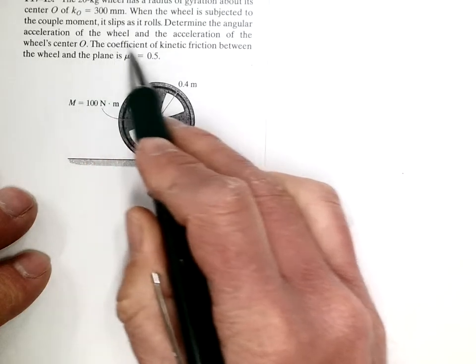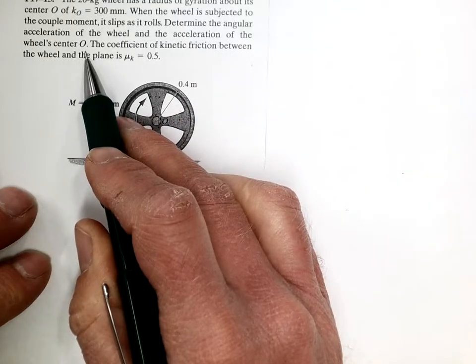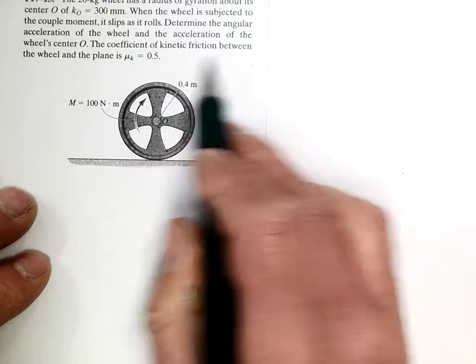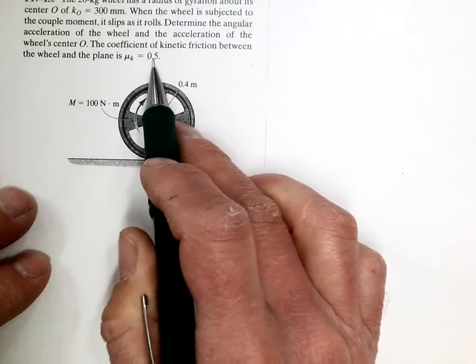Determine the angular acceleration of the wheel and the acceleration of the wheel's center O. The coefficient of kinetic friction between the wheel and the plane is 0.5.